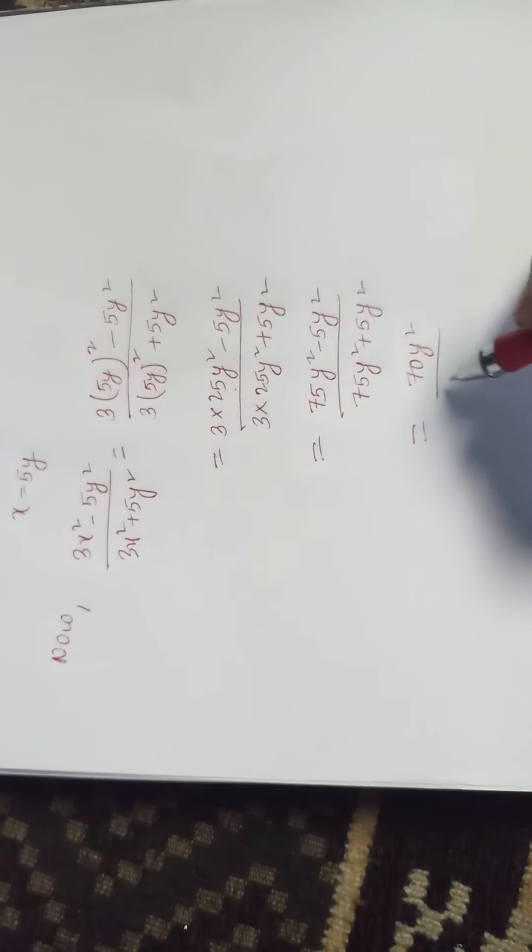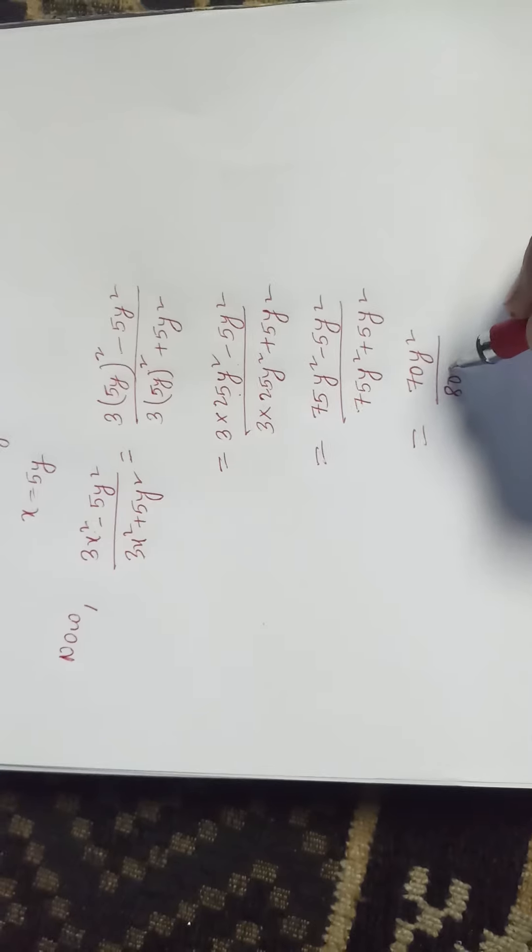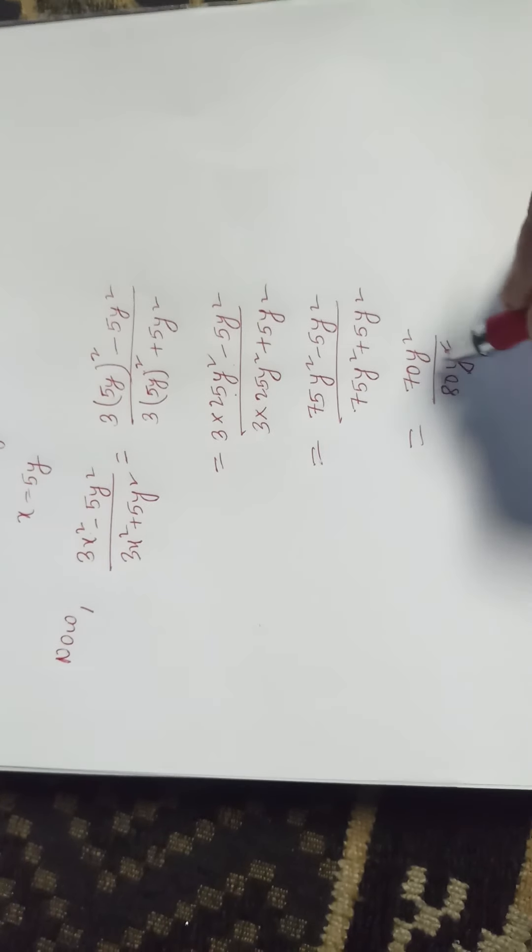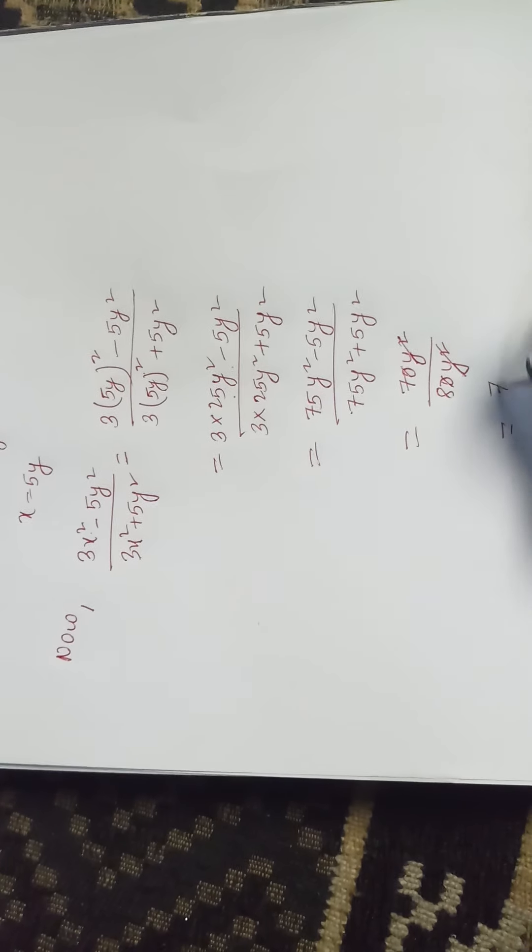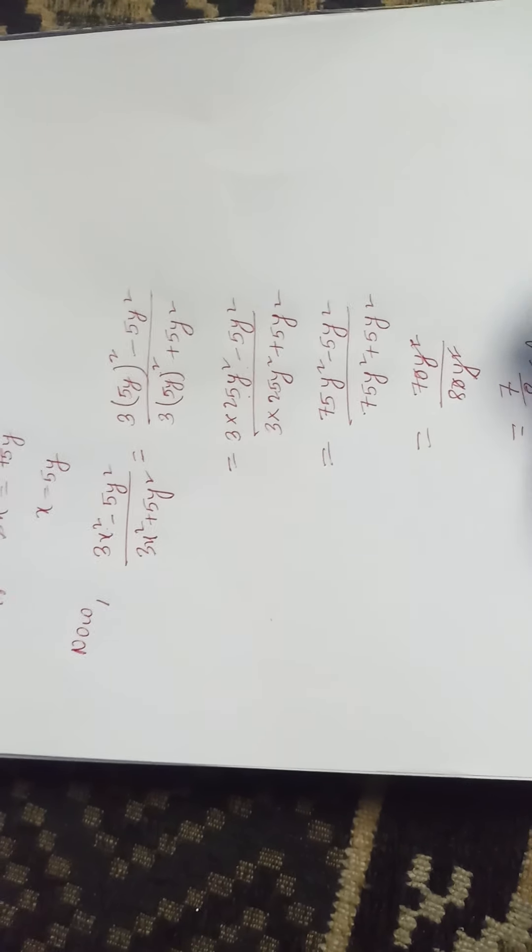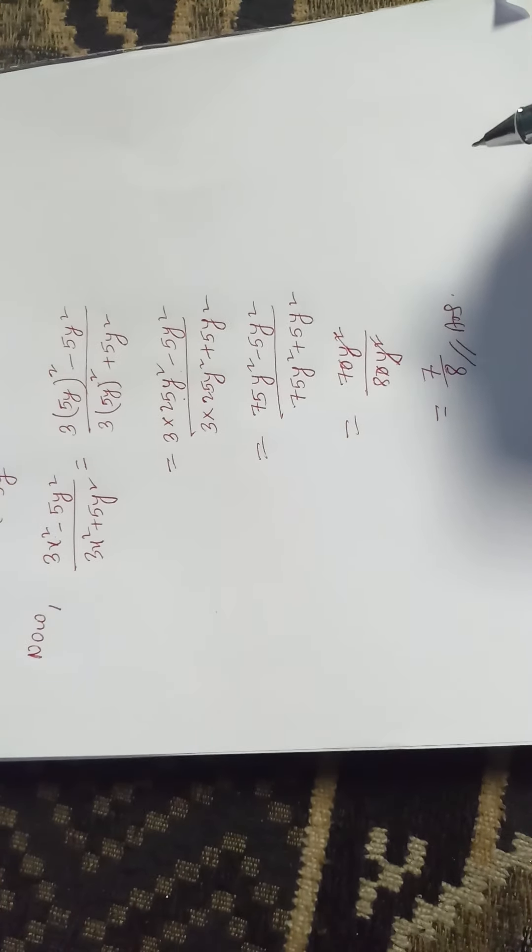We get 70 y square divided by 80 y square. Y square cancels, we get 7 by 8. So the answer is 7 by 8.